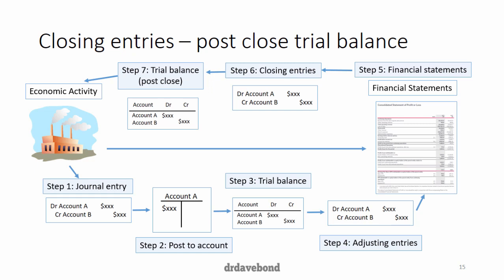In the next topic we'll be looking at a number of adjusting entries for assets. We'll focus on accounts receivable — specifically the allowance for doubtful debts — inventory and how to calculate cost of goods sold, and finally property, plant and equipment: how to bring it onto the books as well as the adjustment for depreciation and how to calculate it.